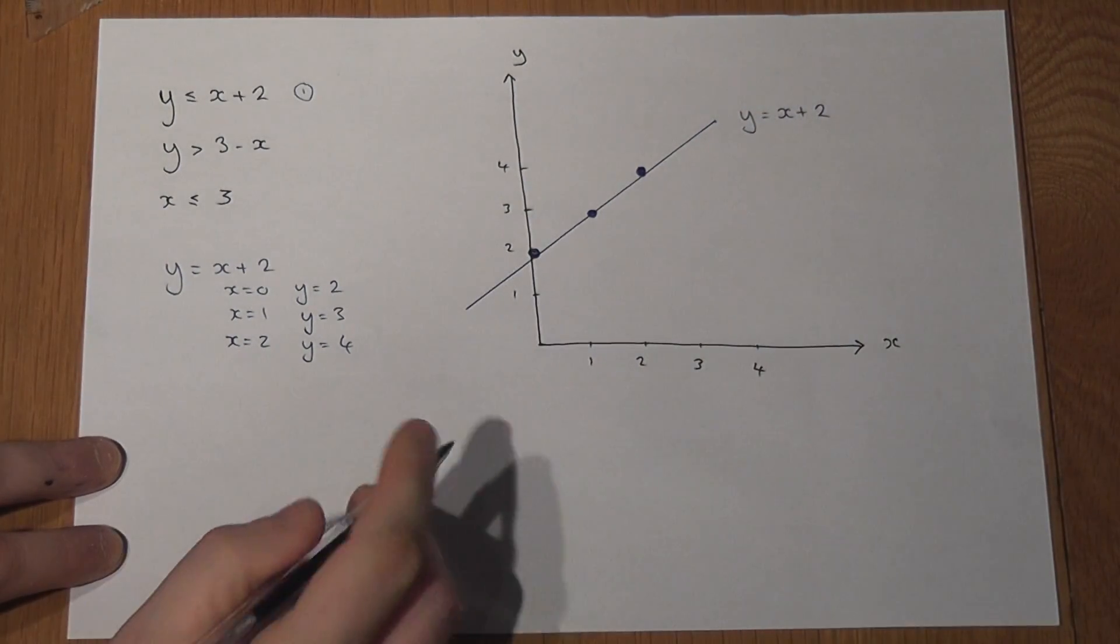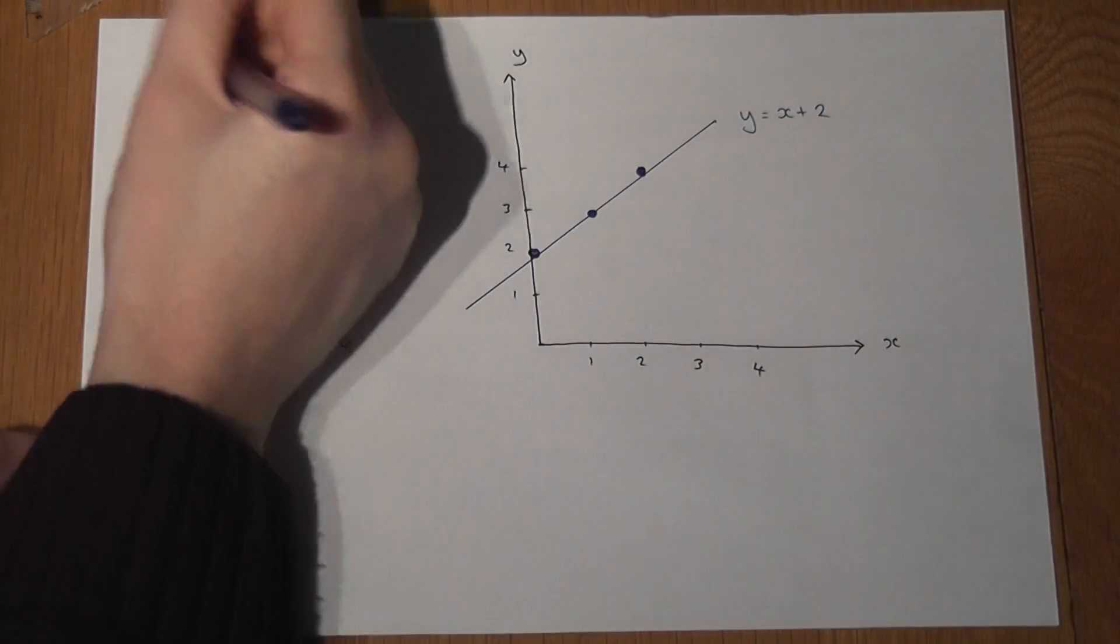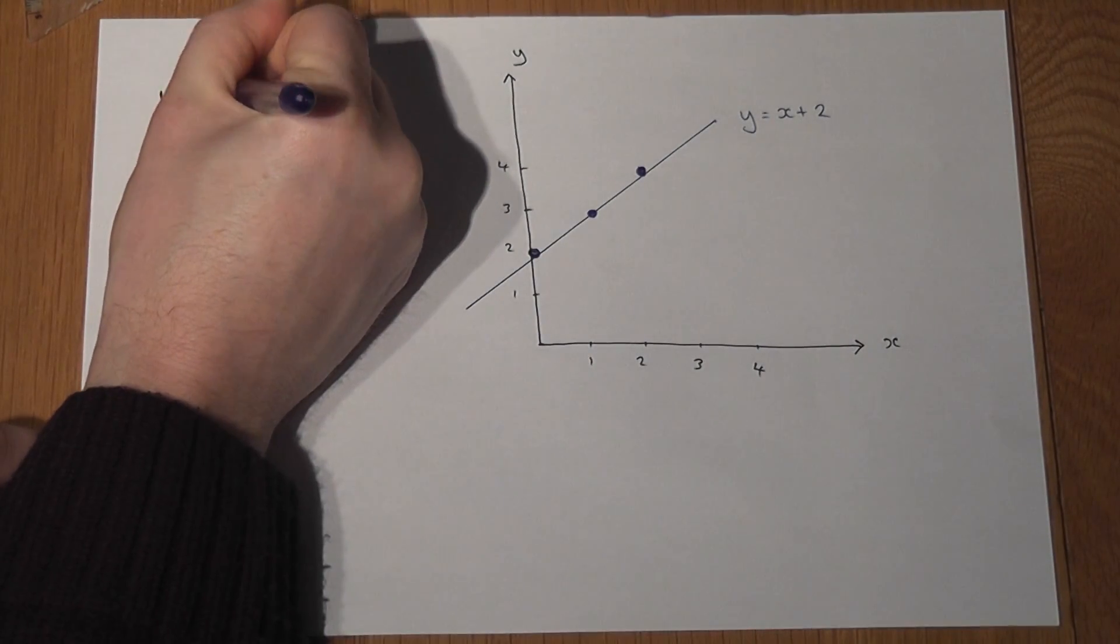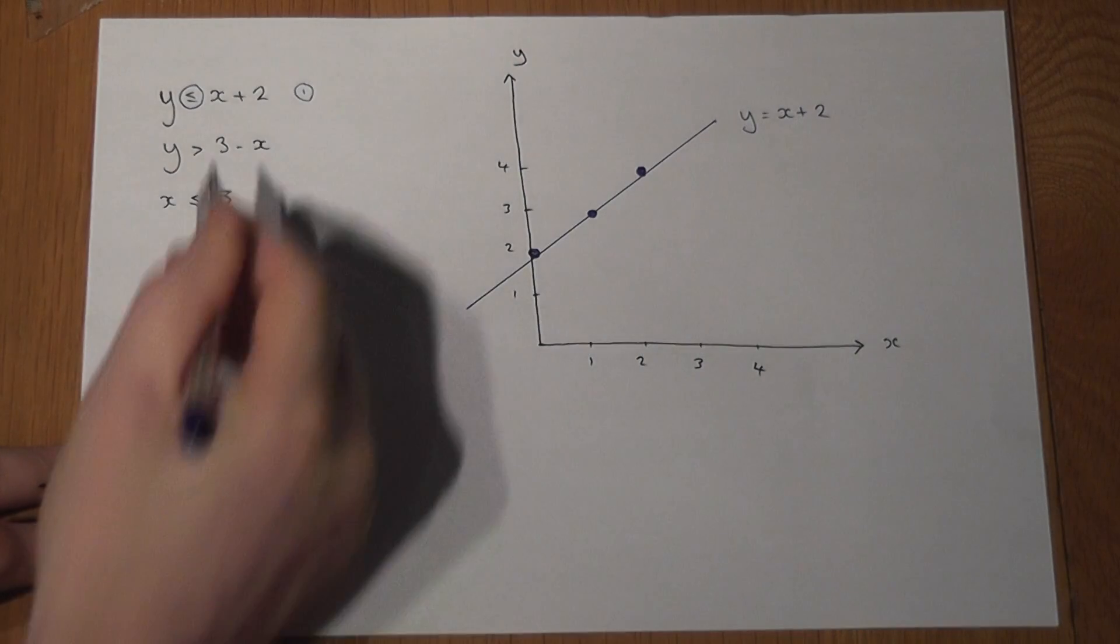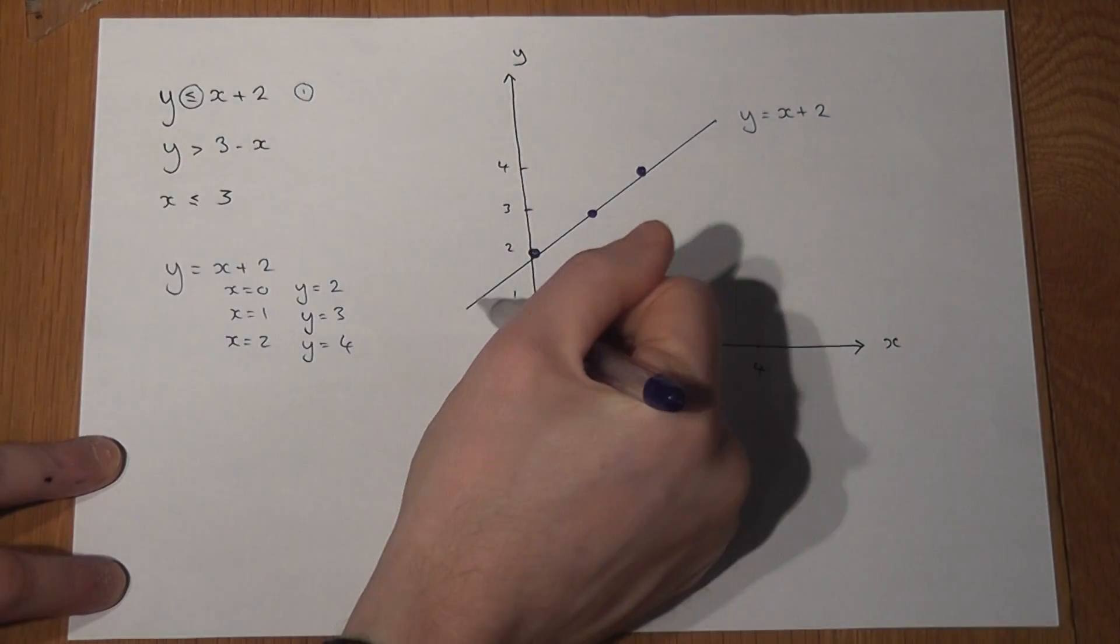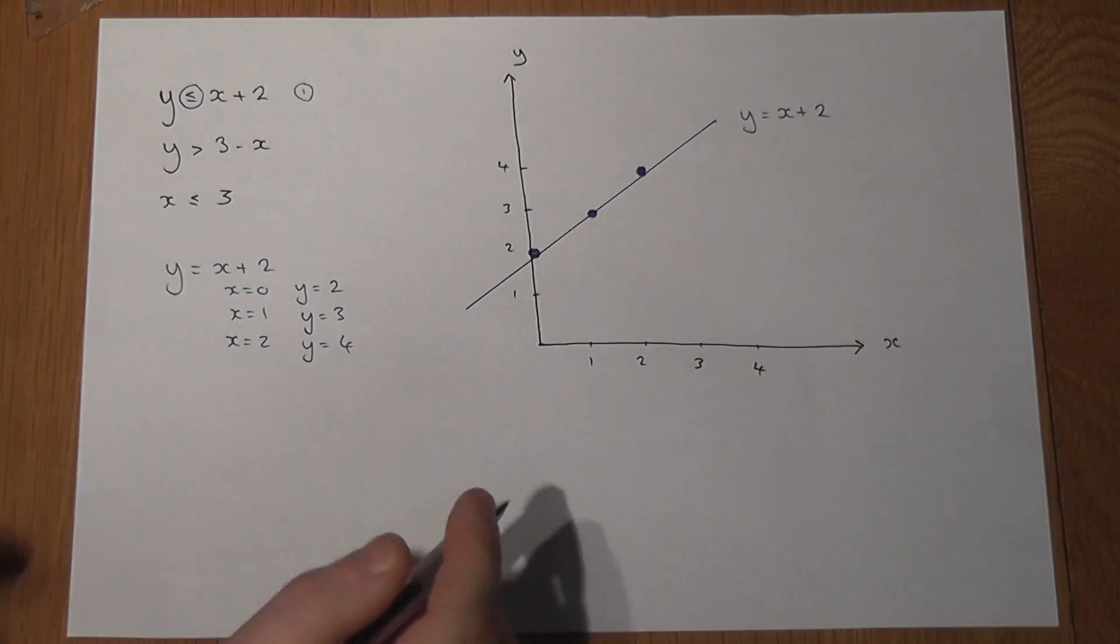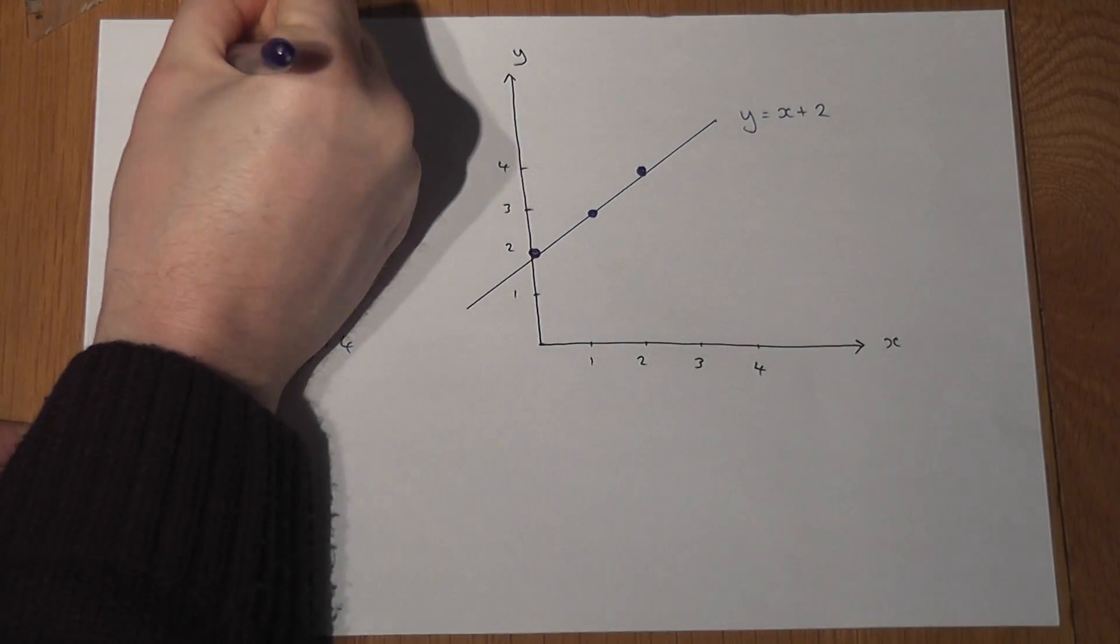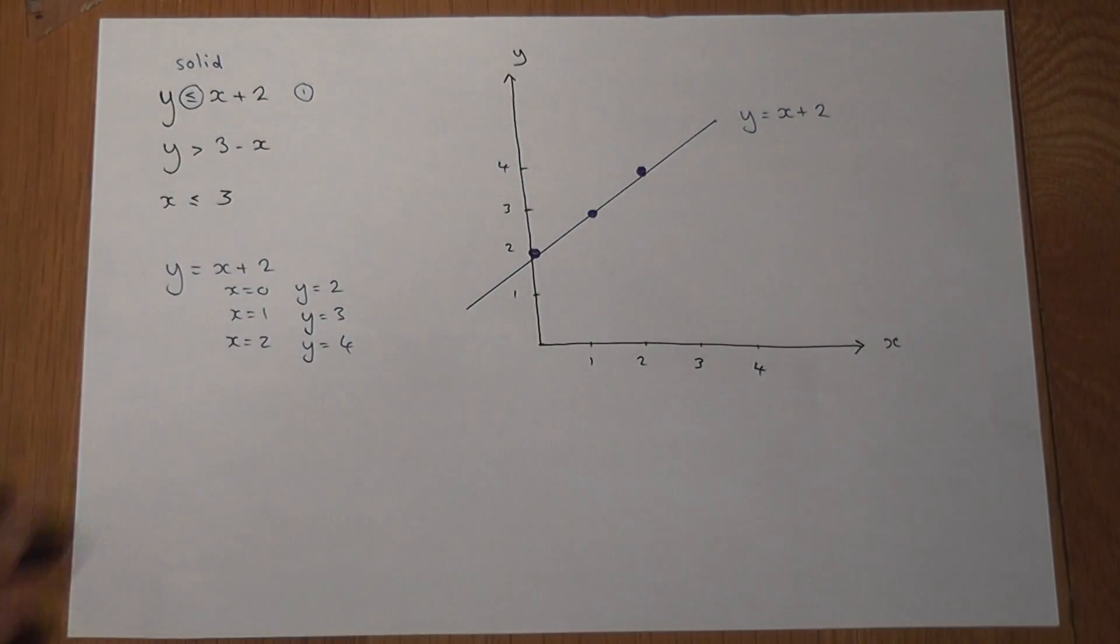Now one key thing to understand with this is that if we've got this type of inequality which is less than or equal to, we use a solid line to join the dots. You'll see the distinction in the second one in a moment.